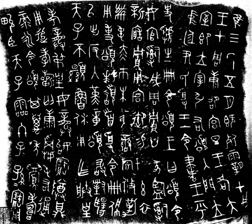Large Seal Script, or Great Seal Script, is a traditional reference to Chinese writing from before the Qin Dynasty, and is now popularly understood to refer narrowly to the writing of the Western and Early Eastern Zhou Dynasties, and more broadly to also include the Oracle Bone Script. The term is in contrast to the name of the official script of the Qin Dynasty, which is often called Small or Lesser Seal Script, also termed simply Seal Script. However, due to the lack of precision in the term, scholars often avoid it and instead refer more specifically to the provenance of particular examples of writing.